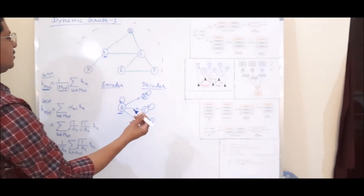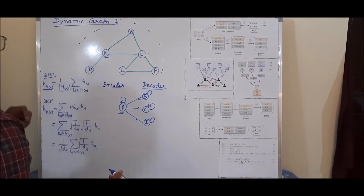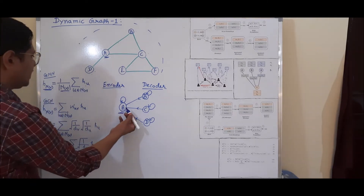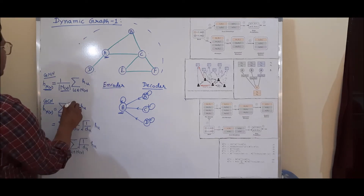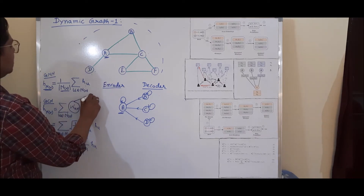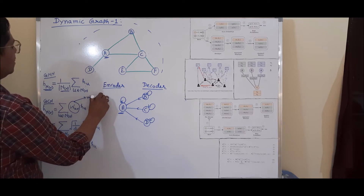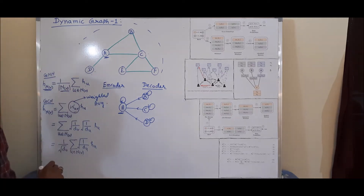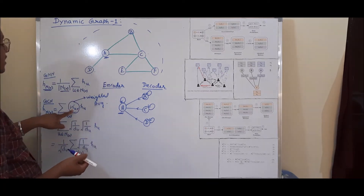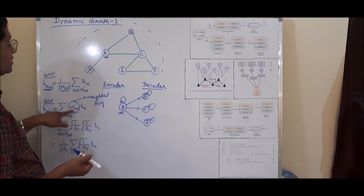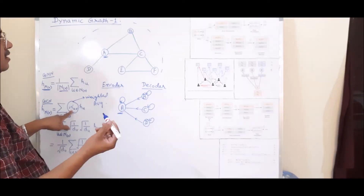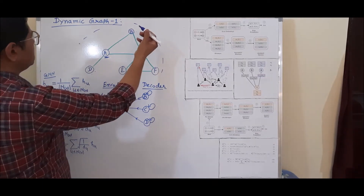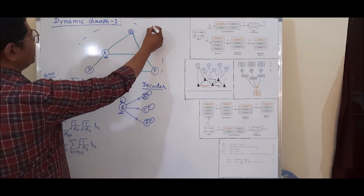In the case of a Graph Convolutional Neural Network (GCN) architecture, we apply a slightly different strategy — a weighted average strategy. These weighted averages are computed through structural components called centrality measures in the graph. The simplest centrality measure is degree centrality.